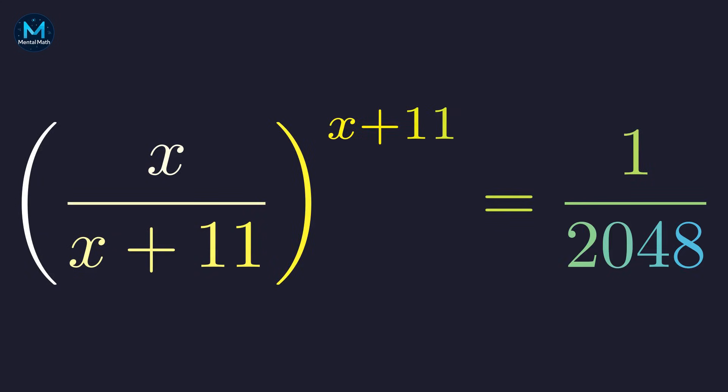Welcome back to Mental Math. Here's a really interesting exponential equation. The variable x appears in both the base and the exponent, which makes this particularly tricky. But the solution comes from recognizing a clever structural pattern.